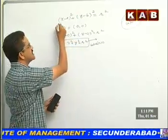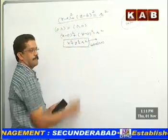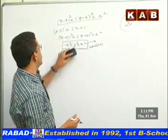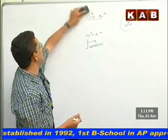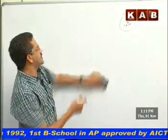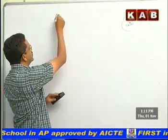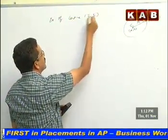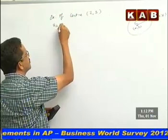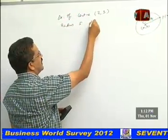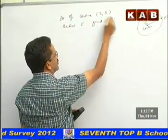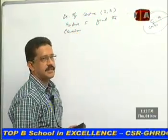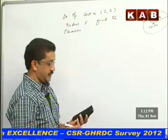We have two results in front of us. Let me show you several examples. The first example: if the center is (2, 3) and the radius is 5, find the equation of the circle.